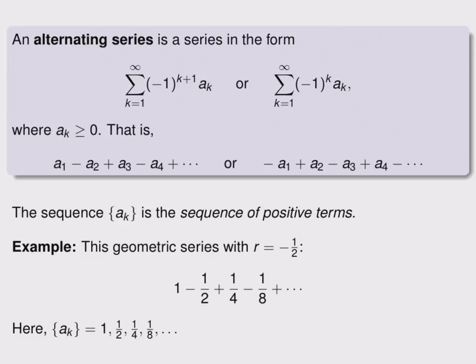In this example, the sequence of positive terms is listed below, and it's the same list of numbers, but positive. Remember, an alternating series is a series, so we are summing up a bunch of numbers, whereas the sequence of positive terms is a sequence, just a list of numbers.